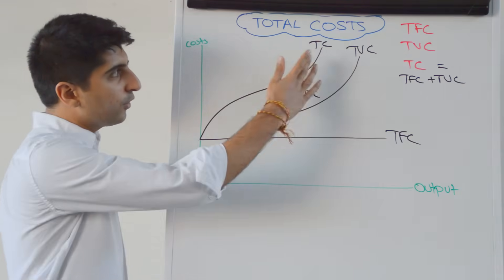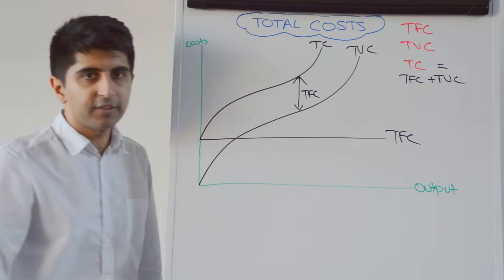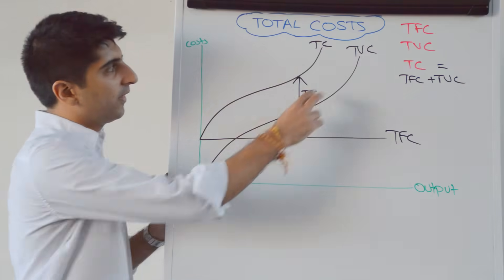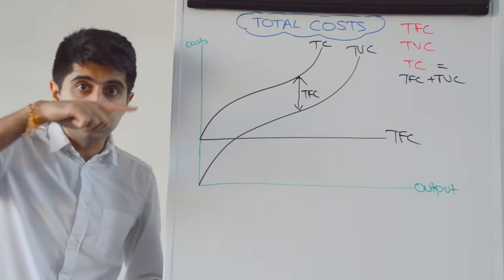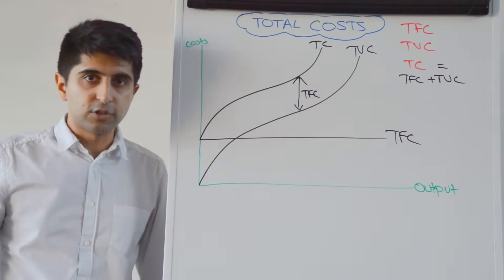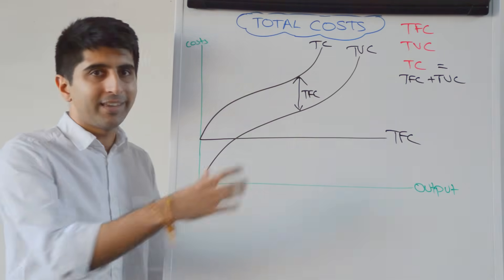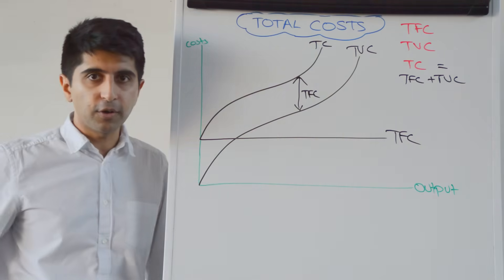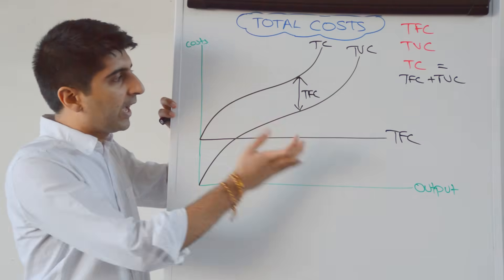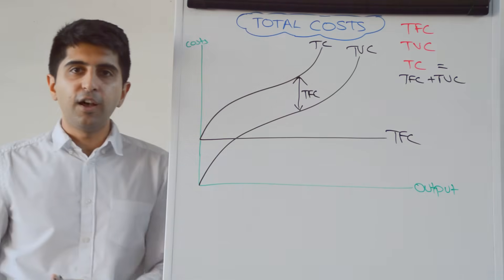So, that is total cost, total variable cost, and total fixed cost. Very easy to understand the shape. Just remember that the total variable cost curve is influenced due to the law of diminishing marginal returns. And, the total cost will take that shape of the total variable cost curve just a bit higher to reflect the constant nature of total fixed cost.